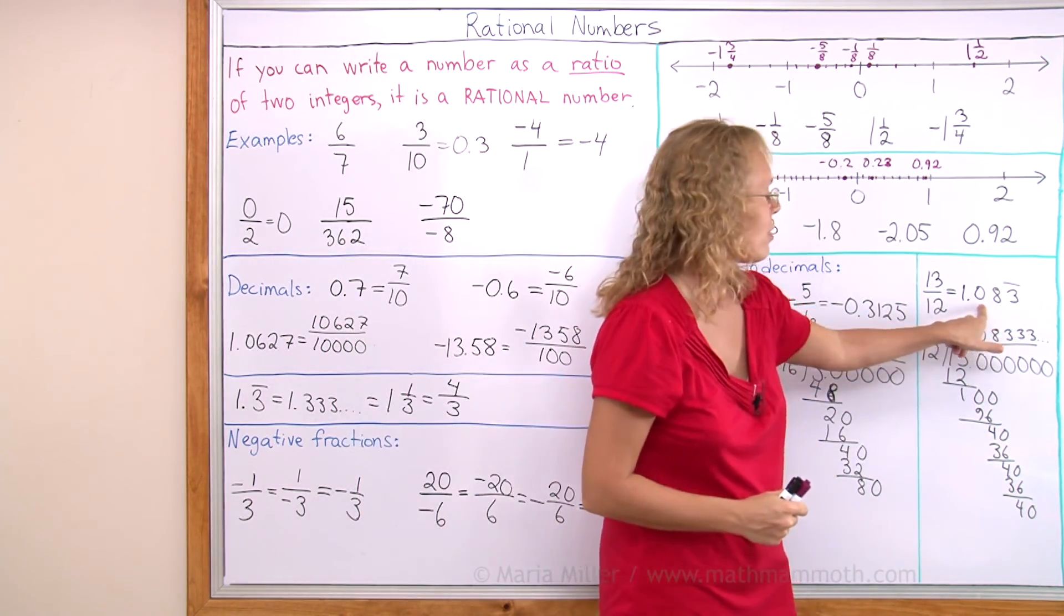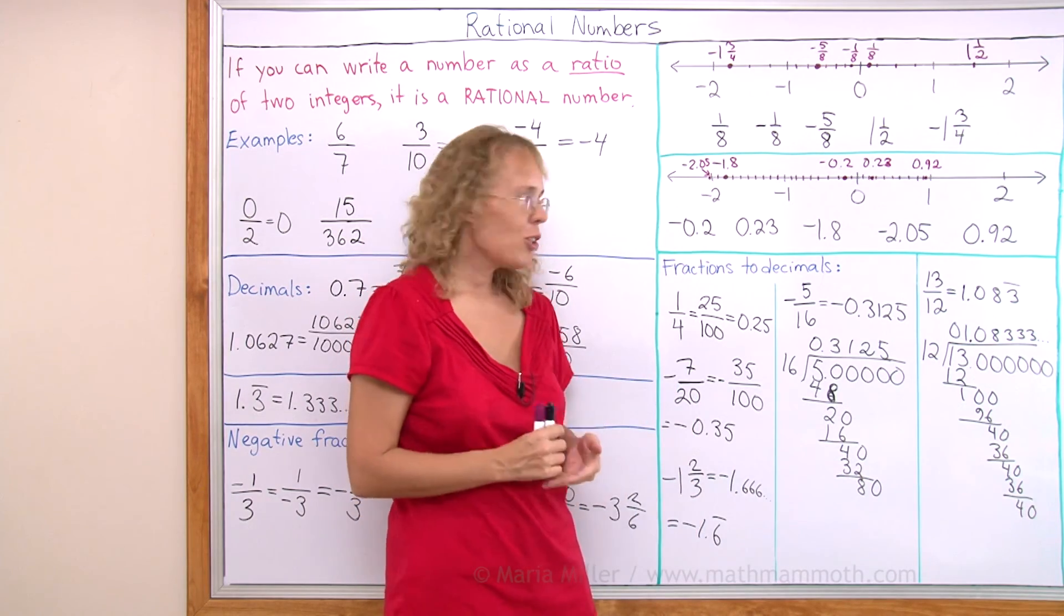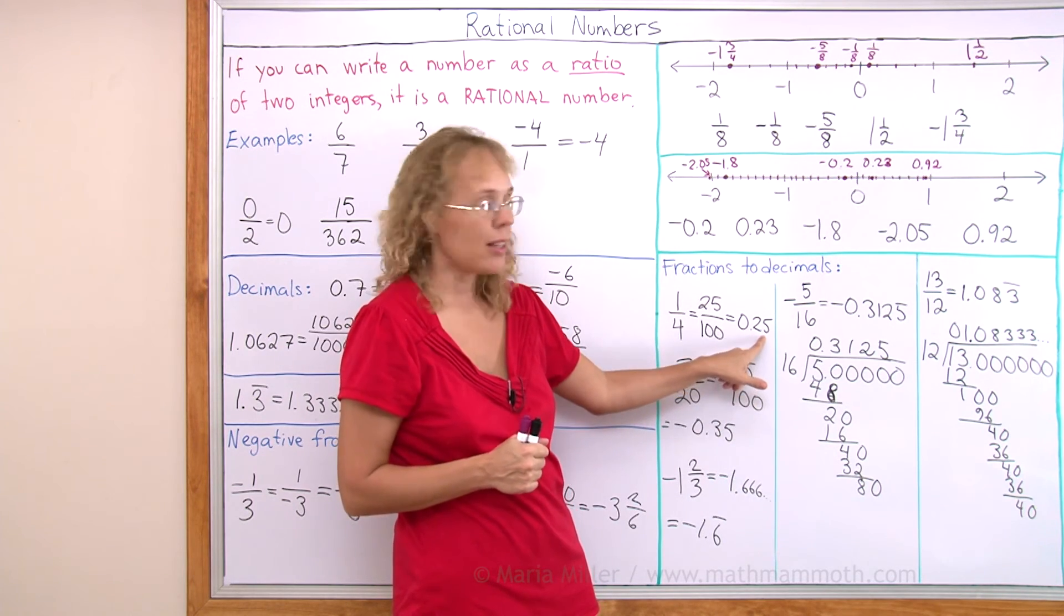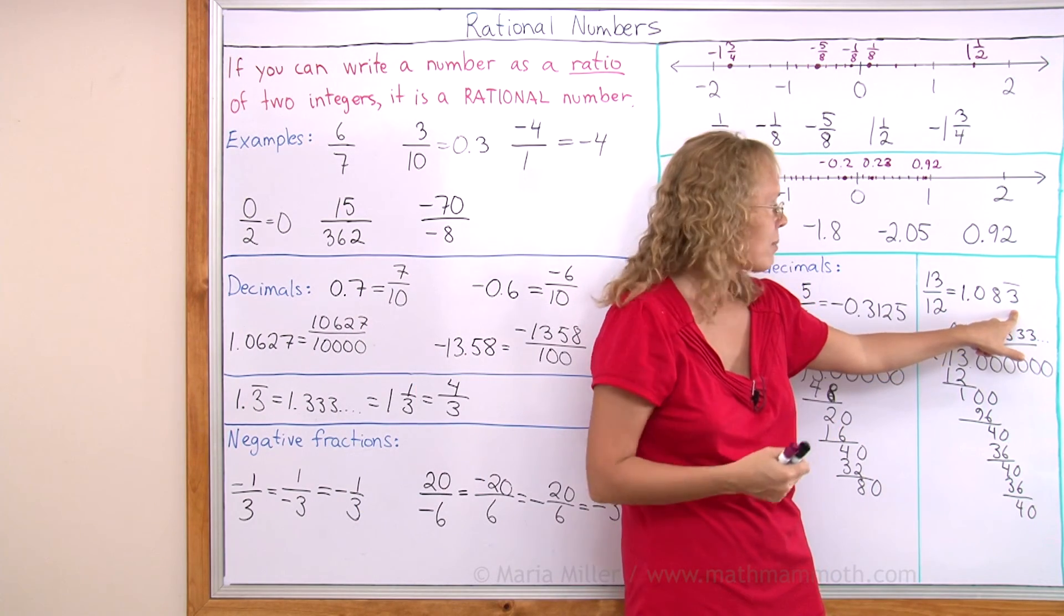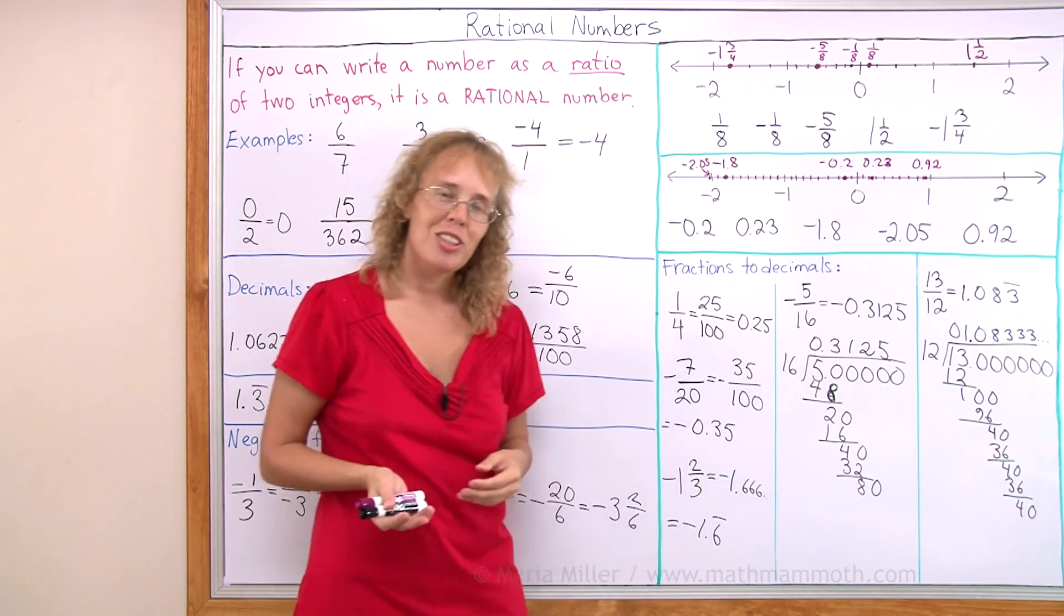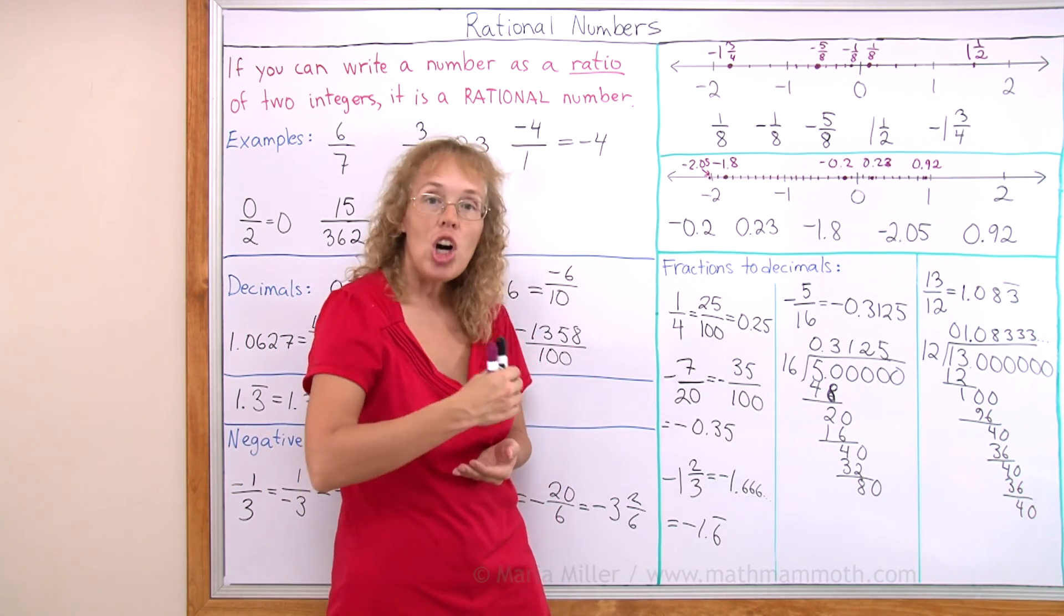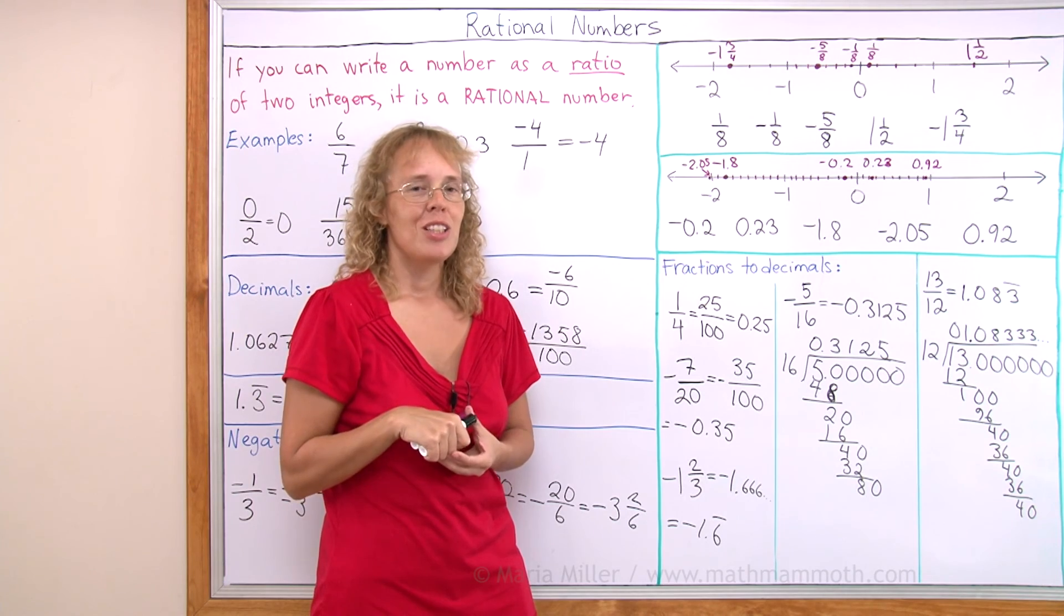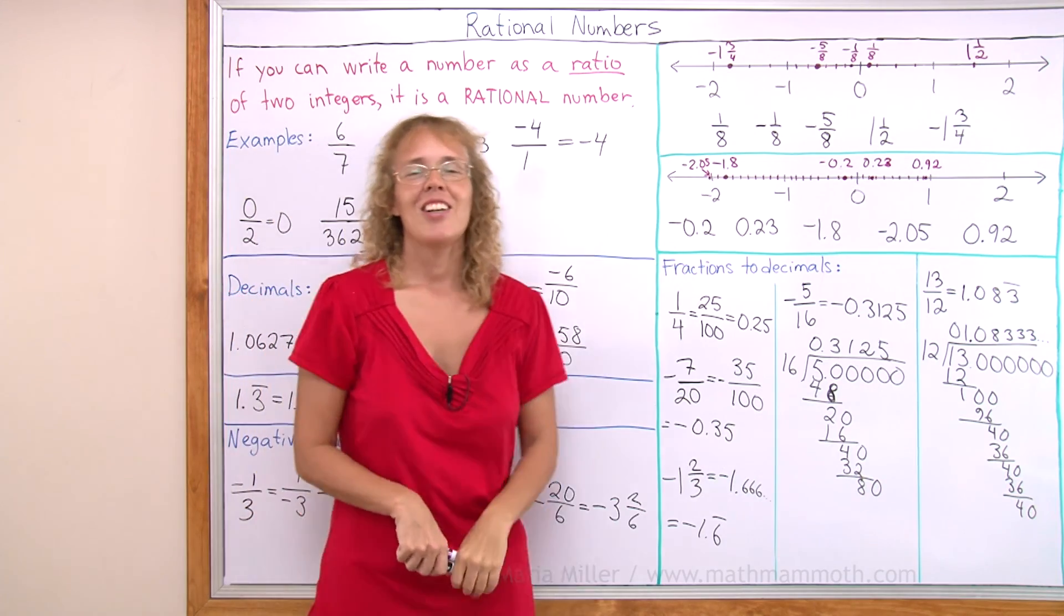So this is a non-ending repeating decimal. And whenever you are changing a fraction into decimal, you either will get a decimal that terminates, like that, like that, or you get a decimal that repeats something. It might even repeat several digits, not just one. And like I mentioned, there are decimal numbers that are not rational. There are decimal numbers that don't repeat but still go on indefinitely without any repeating pattern in their digits. And those are irrational numbers. So there exist numbers that are not rational, but that would be a topic of another lesson. Okay, I hope this was helpful.